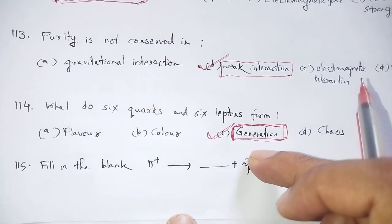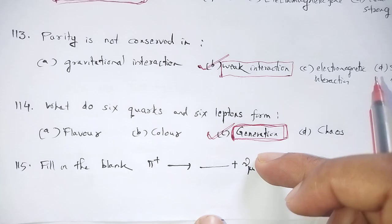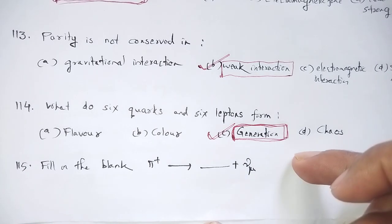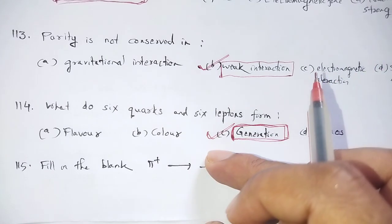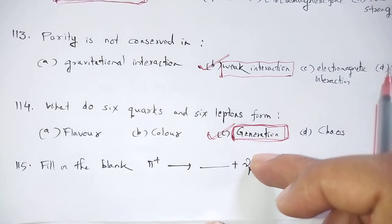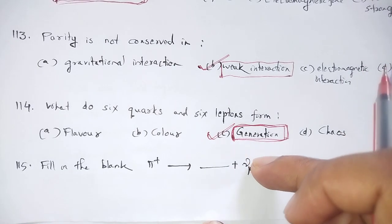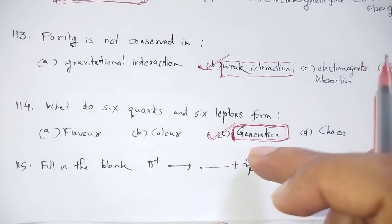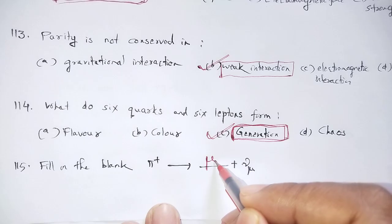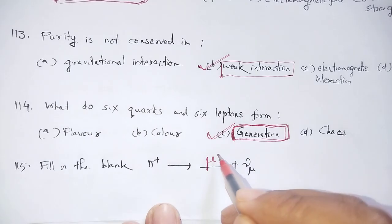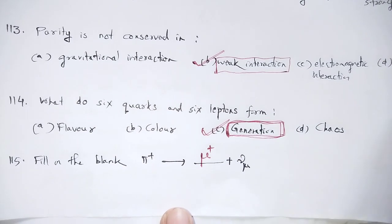The neutrino types are: electron neutrino, mu neutrino, tau neutrino. The particle corresponding to the antiparticle: mu-minus is the particle and mu-plus is the antiparticle — mu-plus is the antiparticle of mu-minus.